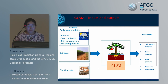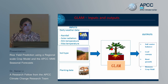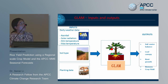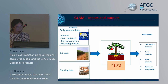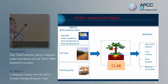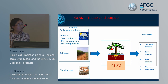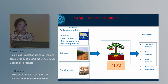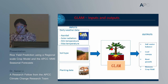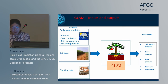The inputs of GLAM include daily weather data such as rainfall, solar radiation, minimum temperature, maximum temperature, soil type, and planting date. Outputs include soil water balance, leaf canopy, root growth, biomass, and crop yield.